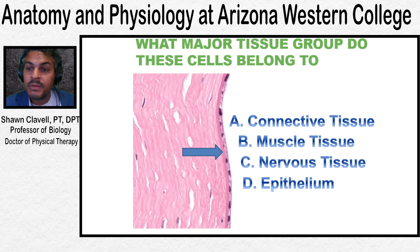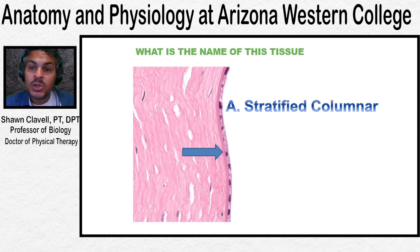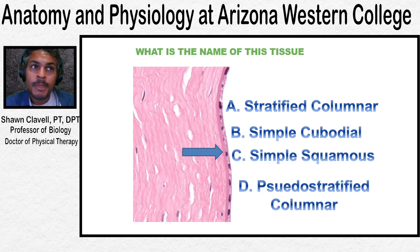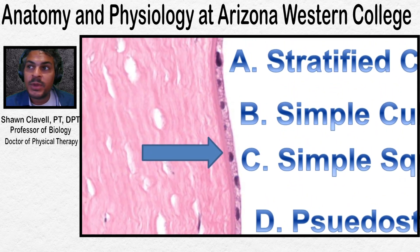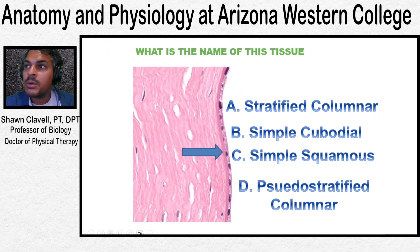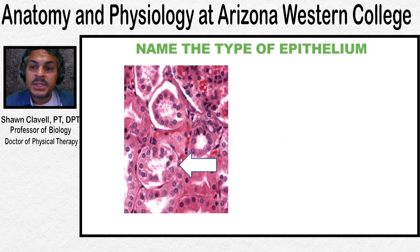This is actually the cornea of the eye — the transparent part that covers the iris and pupil. If you said that was epithelial tissue, you'd be correct. Now, specifically, what type of epithelium is it? Is it stratified columnar, cuboidal, simple squamous, or pseudostratified columnar? Epithelium is identified by its number of layers and its shape. We can see there's one layer with a flat disc-like shape, so this is identified as simple squamous epithelium.